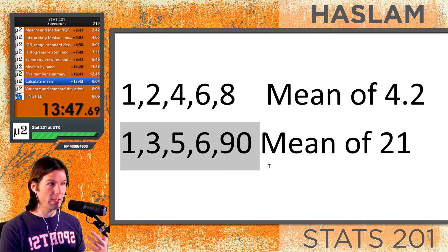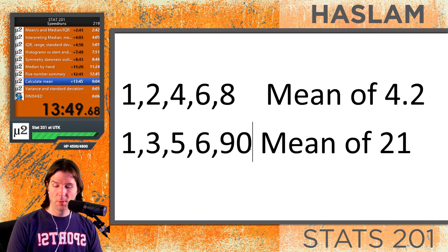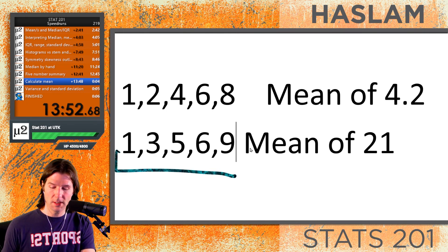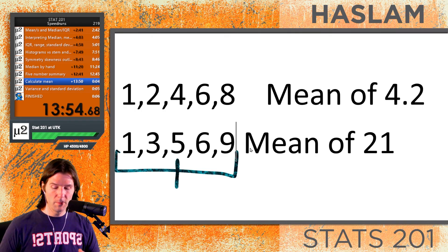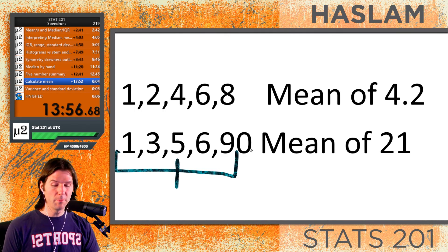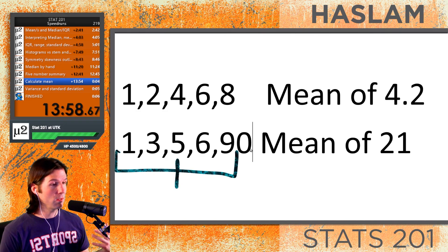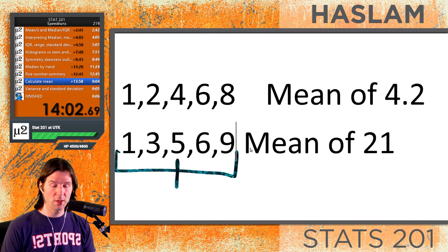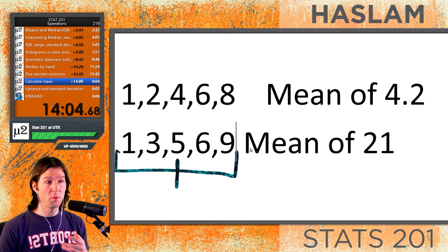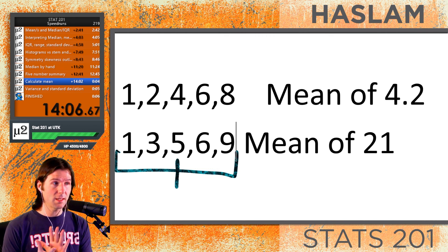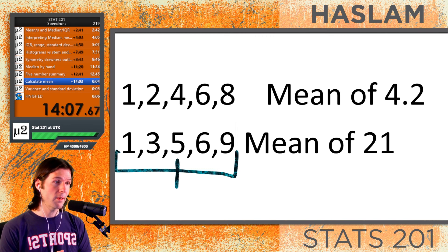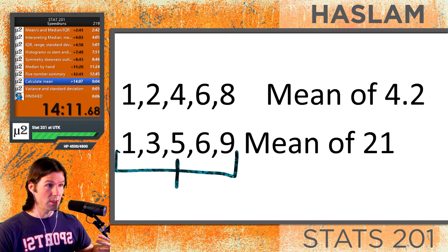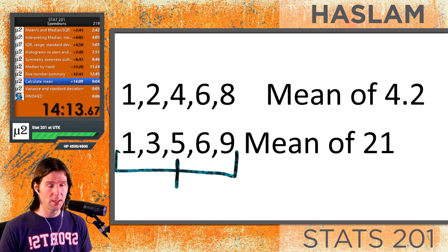When you change the 9 to 90, notice what did not change — the mean changes, but the median does not. The median is a measure of position and does not change. So outliers impact the mean and not the median. Outliers also impact the standard deviation and not the IQR.